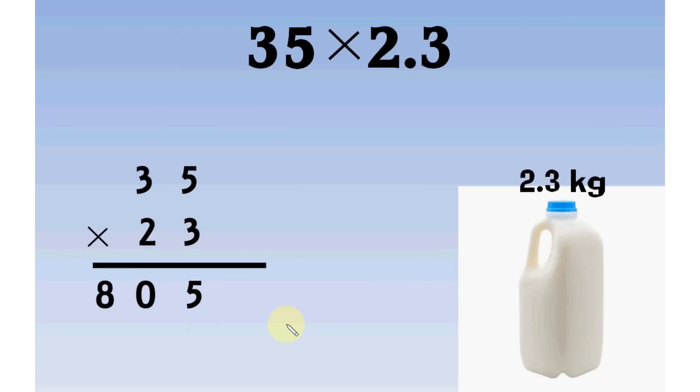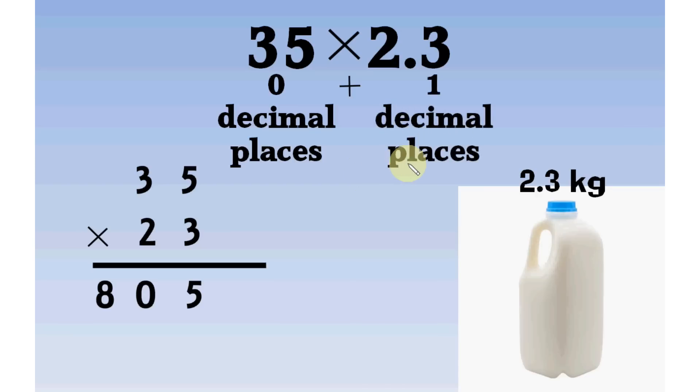Now, where should we put the decimal point? This is the only new thing you need to learn here. We look at the numbers taken for multiplication. 35 has no decimal, so it has 0 decimal places. 2.3 has 1 digit after decimal, so it has 1 decimal place. We just add number of decimal places of all the numbers. 0 plus 1 equals 1.